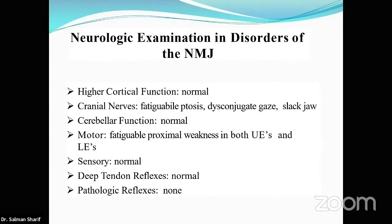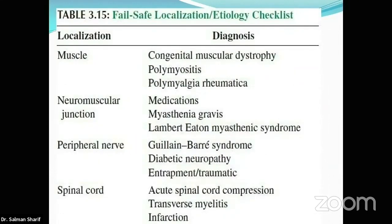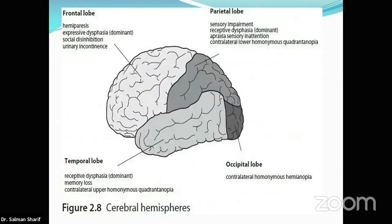At the neuromuscular junction — conditions like myasthenia gravis — the hallmark is fatigability: patients with proximal upper extremity weakness become increasingly weak on repetitive testing. Muscle disorders present with weakness and muscle wasting; neurological examination may be relatively normal until late in the disease, and they predominantly involve proximal muscles more than distal muscles. These conditions — muscle diseases, neuromuscular junction disorders, and peripheral nerve disorders — are generally non-neurosurgical.